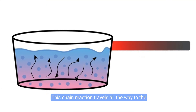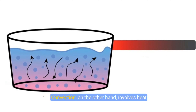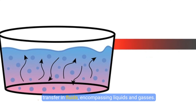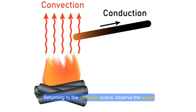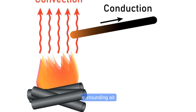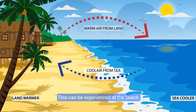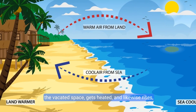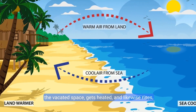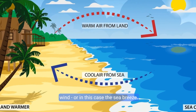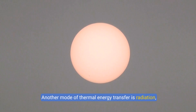This chain reaction travels all the way to the handle's other end. Convection, on the other hand, involves heat transfer in fluids, encompassing liquids and gases. Returning to the campfire scene, observe the warm air above the fire — it ascends because it's less dense than the cooler surrounding air. This can be experienced at the beach when warm air rises, cooler air rushes in to occupy the vacated space, gets heated, and likewise rises, setting a circular convection current in motion — what we experience as wind or a sea breeze.